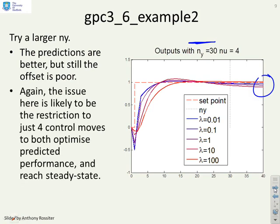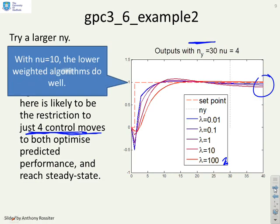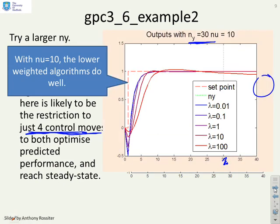Now again there is an issue here likely to be restricted to the fact you've only allowed yourself 4 control moves and it's difficult to optimize predicted performance and reach steady state while at the same time saying my control moves need to be small, which is what these lambdas are going to do. So what if we try nu equals 10 which allows us more control moves and smaller increments in order to get to the steady state? And what do you notice? You've got much better behaviour in general.